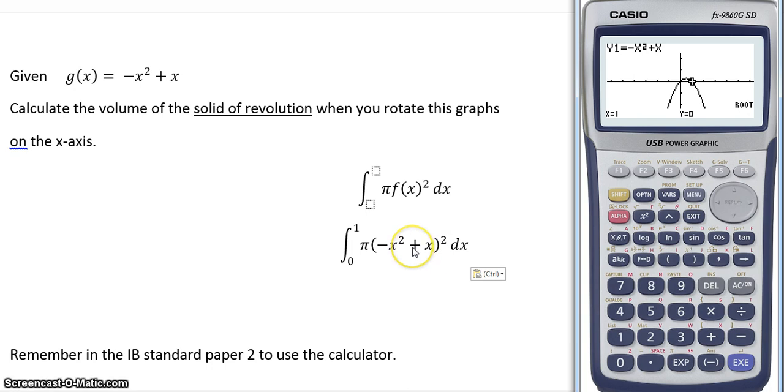Once you've decided which integral to use, remember you must always follow this formula: π times the function squared. In this case, the roots are the limits, so we put 0 and 1.